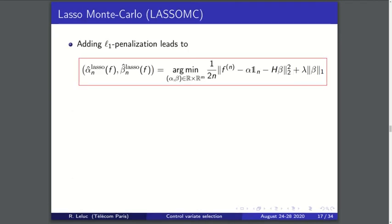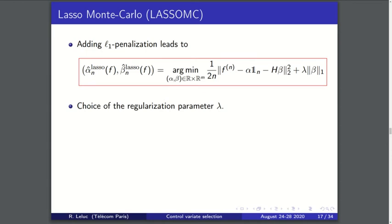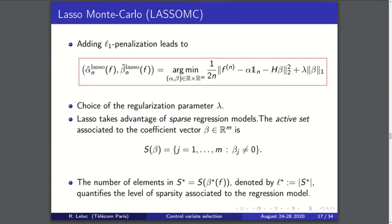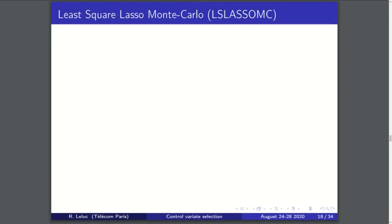The lasso, standing for least absolute shrinkage and selection operator, is a penalization technique invented by Tibshirani where we add the ℓ1 norm of the coefficient β with a parameter λ which controls the sparsity level of our model. Some notation: we denote by S(β) the support of β, which is the active set of this vector, and ℓ* will denote the number of active control functions.